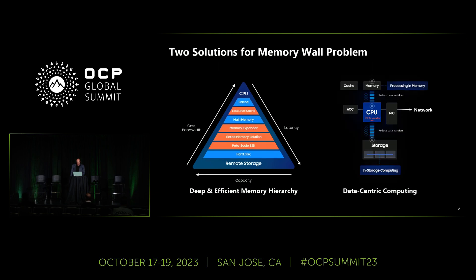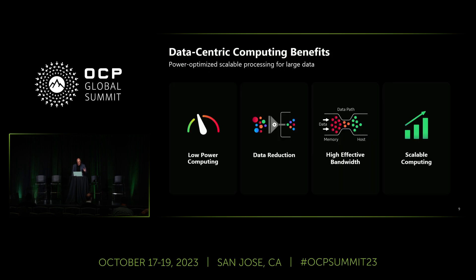To address the memory wall problem, we're now also talking about data-centric computing — instead of moving the data back and forth, which is very expensive and consumes a tremendous amount of power, we're now able to put compute where the data resides. The benefit is lower-power computing, freeing up the pipe with higher effective bandwidth, and scaling compute resources from cloud to edge for a distributed or heterogeneous composable network.